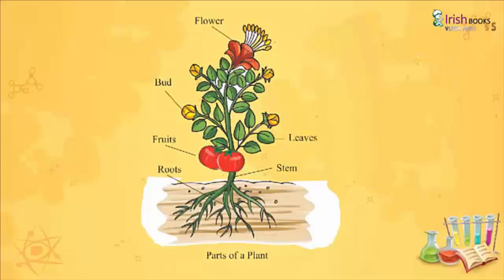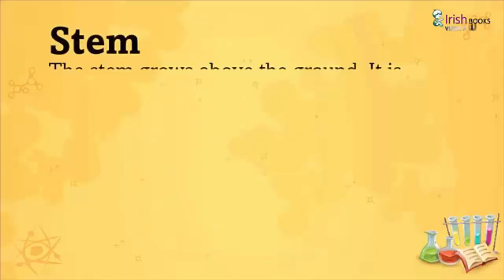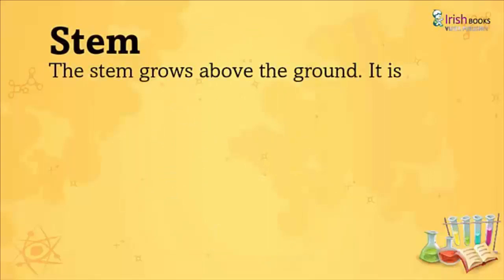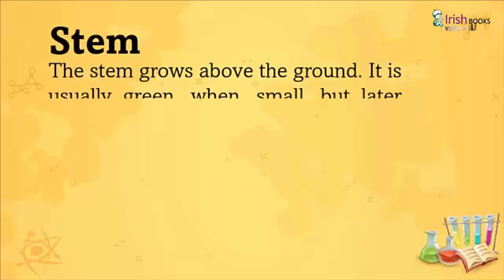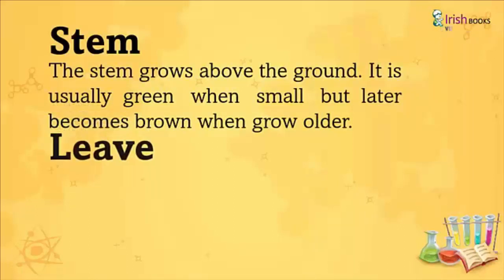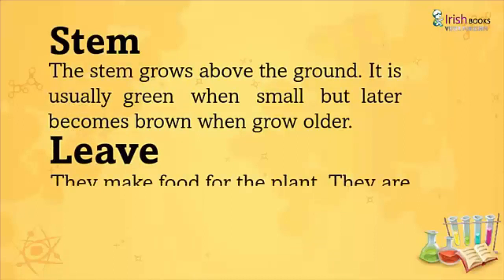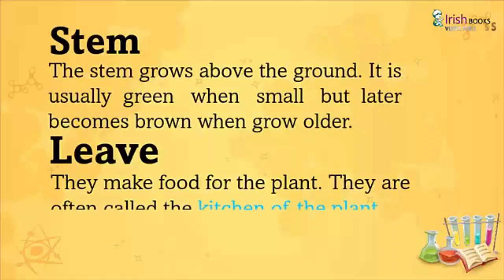Stem: The stem grows above the ground. It is usually green when small but later becomes brown when it grows older. Leaves: Leaves make food for the plants. They are often called the kitchen of the plant.